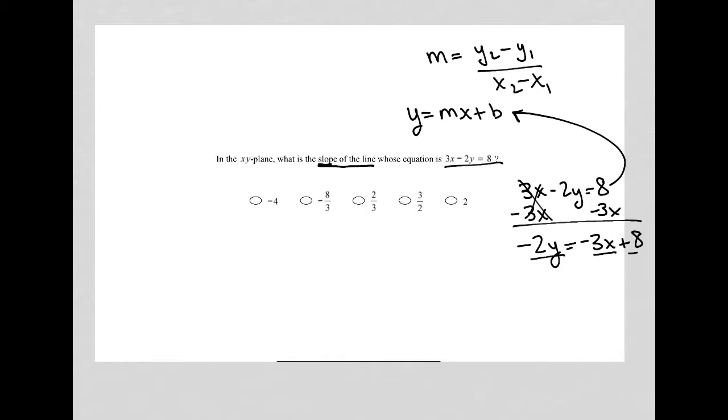And then I can divide everything by negative 2, leaving me with positive y equals 3 over 2, positive 3 over 2, because negative divided by negative is a positive. So, positive 3 halves x and then minus 4.